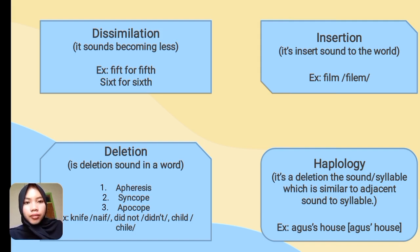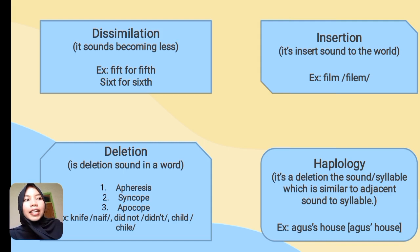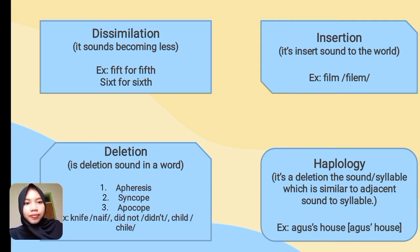The second type of deletion is syncope. Syncope is the deletion of a middle sound. For example, 'did not' — we pronounce it as 'didn't', deleting the vowel sound between N and T.